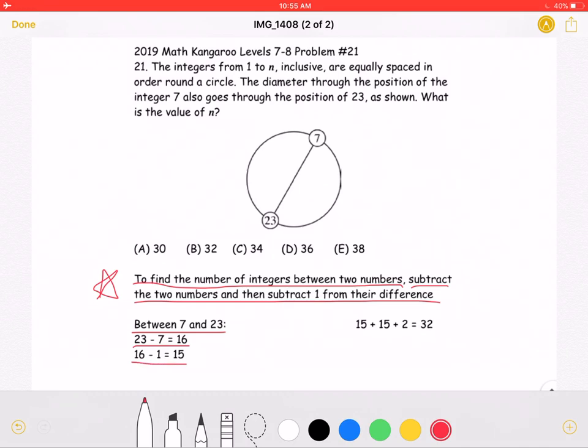That means that over here, between 7 and 23, we have a total of 15 integers.